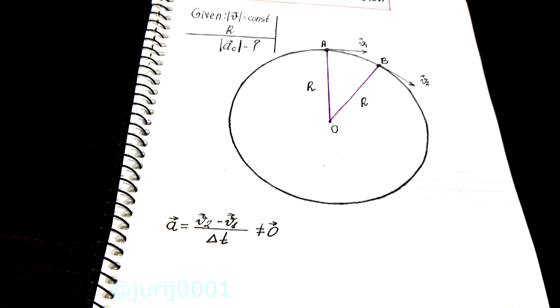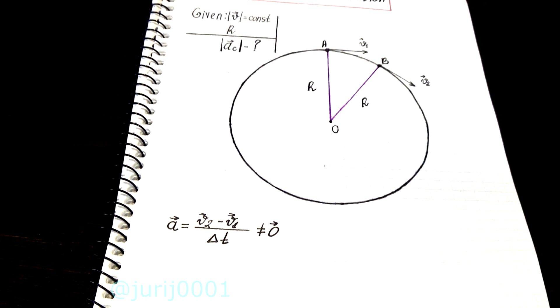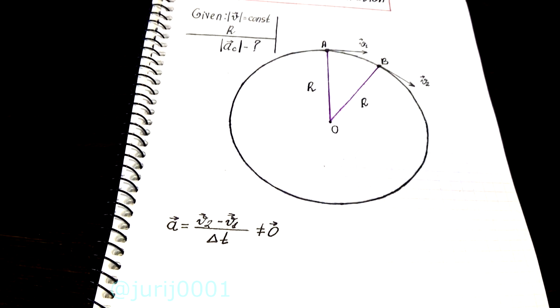Vectors will be the same when they have the same direction and modules. And in our case the modules are the same, but the directions are different.